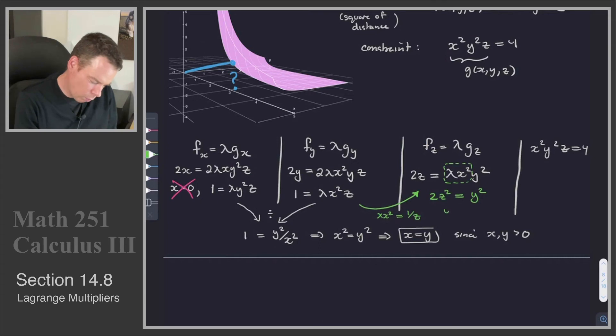Or in other words, y is equal to root 2 z. And that again, because when we're taking square roots, we just have to worry about the positive values. So now I have y is equal to root 2 z.